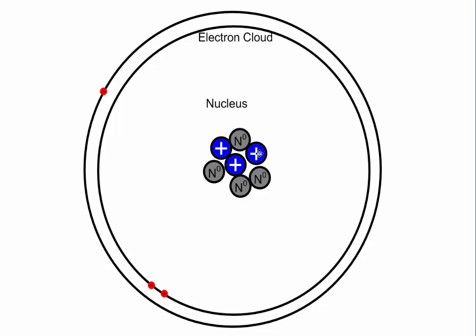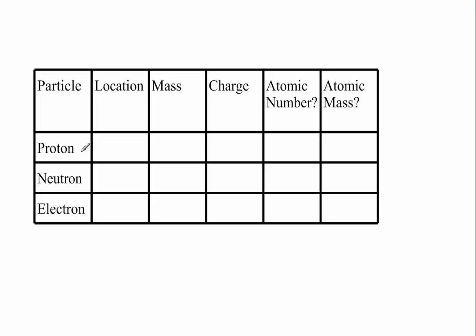These particles right here, we're going to call a proton. And protons are in the nucleus, obviously. And they have a charge of plus one, which is why we always draw them with a plus sign on them. So protons, they're found in the nucleus, and they have a charge of plus one.